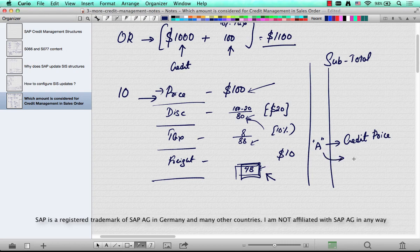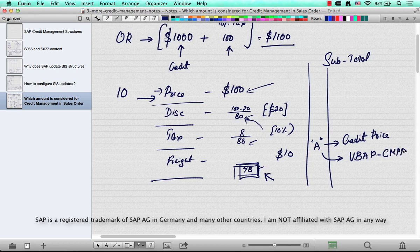And that will be moved to a field called VBAP, which is the line item level table, and the column is CMPRE.